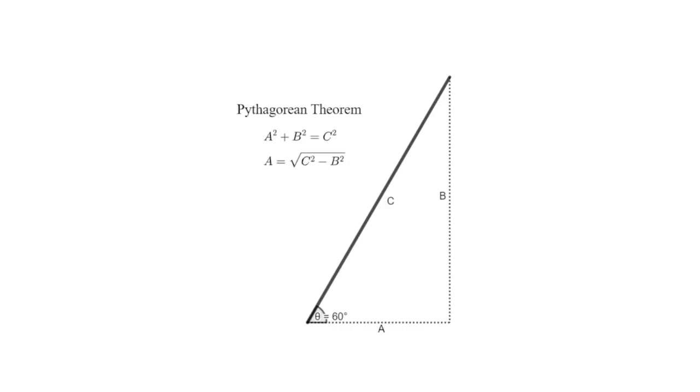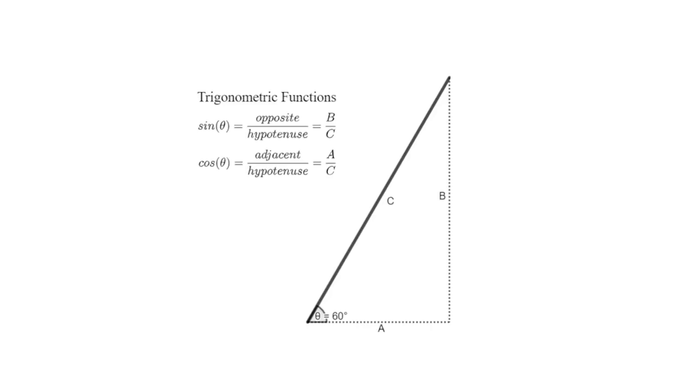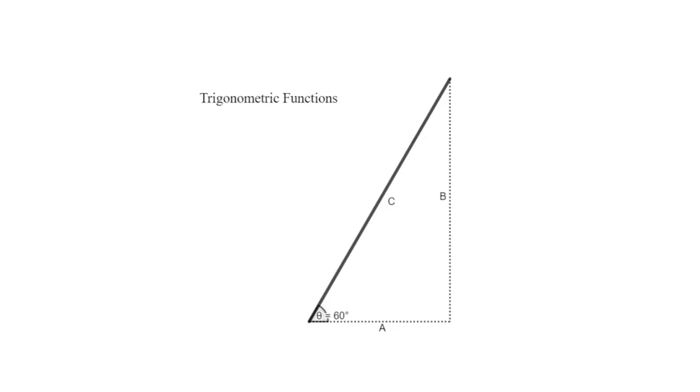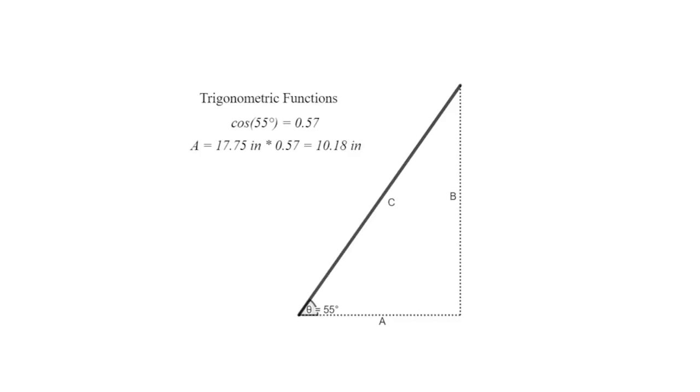If you want to calculate the length of that projected diameter, you can use trig functions, which encode all the possible leg lengths of a right triangle for a given angle. So you just multiply the board's diameter by the cosine of the angle, and you get the reduced width of the board.